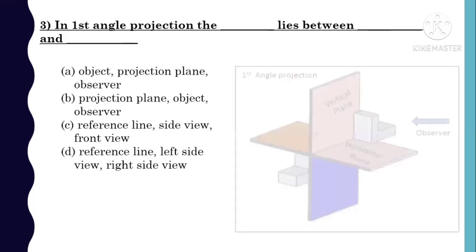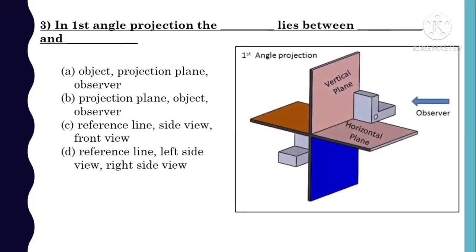Let's see the first angle projection method. The observer is here, there is an object, and then the vertical plane. So the object is in between the observer and the plane — object lies between vertical plane and observer. So option A is correct.